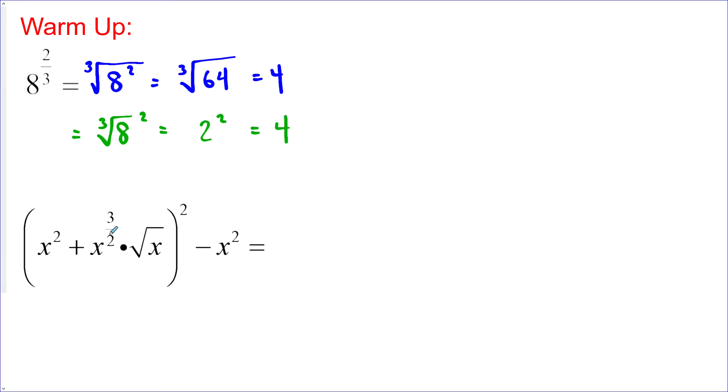For this one, we have a mixture of exponential and radical form. So, I find it easier to work in exponential form. So, the first thing I'm going to do is convert this radical to an exponent. And it shows no index here. So, I know the default index is 2, and that would go in the denominator of my exponent. And now I can multiply those together.